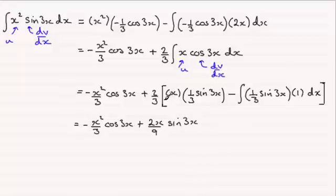And then we've got plus 2 thirds multiplied with the minus 1 third here. Remember the third can be brought out of this integral. So that's going to give us minus 2 ninths. And then we've got the integral of just simply sine 3x.